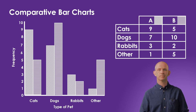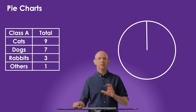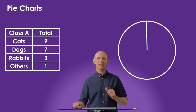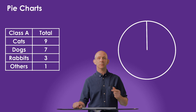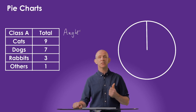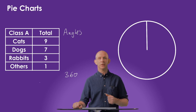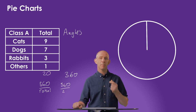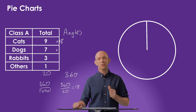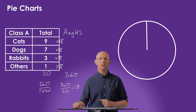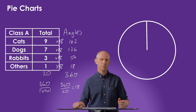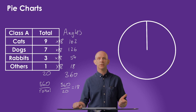Next we'll look at pie charts and how to display information accurately. All pie charts are fully filled with no gaps between sectors. Since the degrees in a circle always add up to 360, so will the total of the angles for all sectors. We can state that the value of each piece of data in degrees is 360 divided by the total frequency — in this case 20 — giving us 18 degrees per piece of data. Using this as a multiplier: 9×18=162°, 7×18=126°, 3×18=54°, and 1×18=18°. These all add up to 360°.